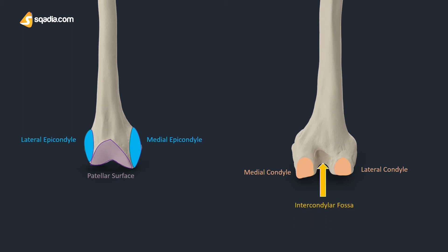The intercondylar fossa is a deep notch on the surface of the femur, between the two condyles. It is the point of attachment of various ligaments and menisci that allows the movement of the knee joint. Now these were all the bony landmarks of the bone — let's move to the muscle attachments.